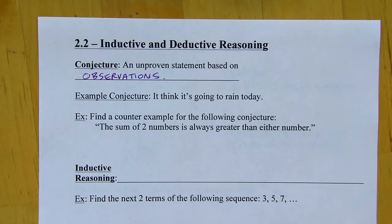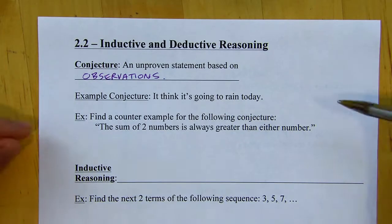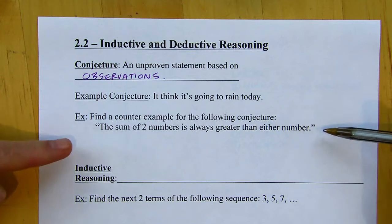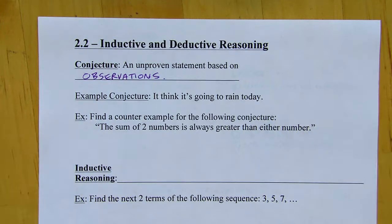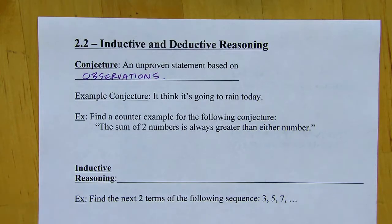What I want to do is find a counterexample to show that this isn't always true. If I use two positive numbers, it's always going to be true. But if one of the numbers is either zero or negative, it's not going to work.